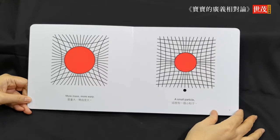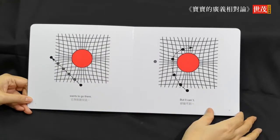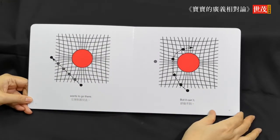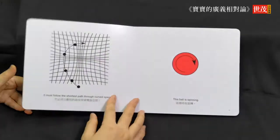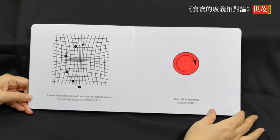A small particle wants to go there, but it can't. It must follow the shortest path through curved space.